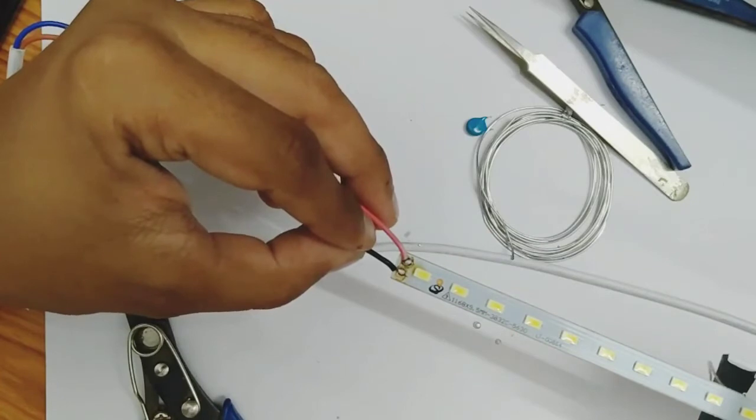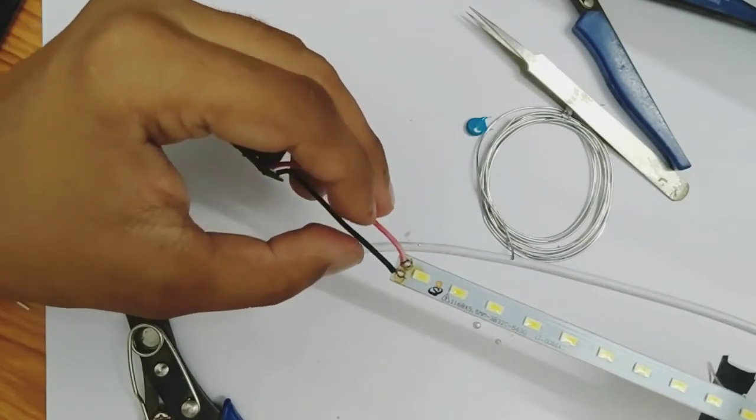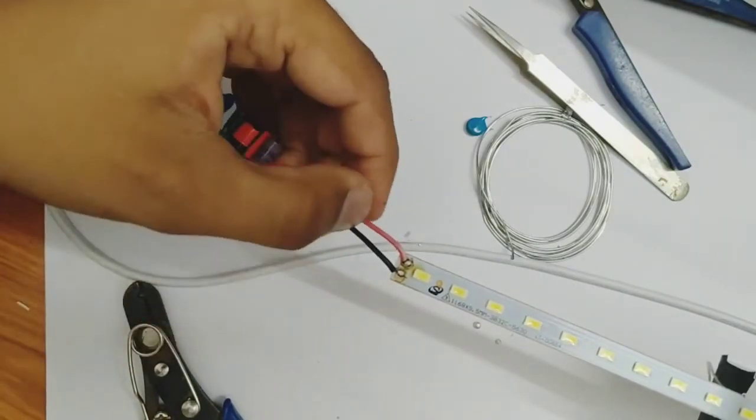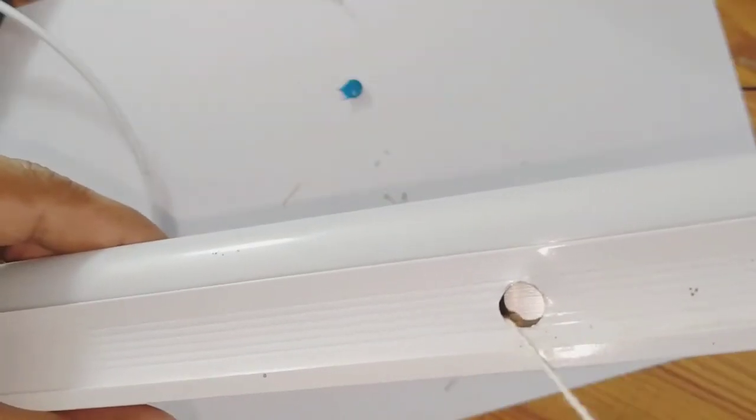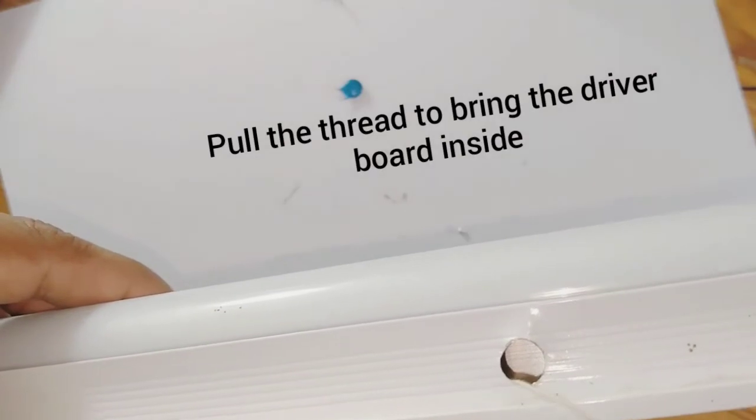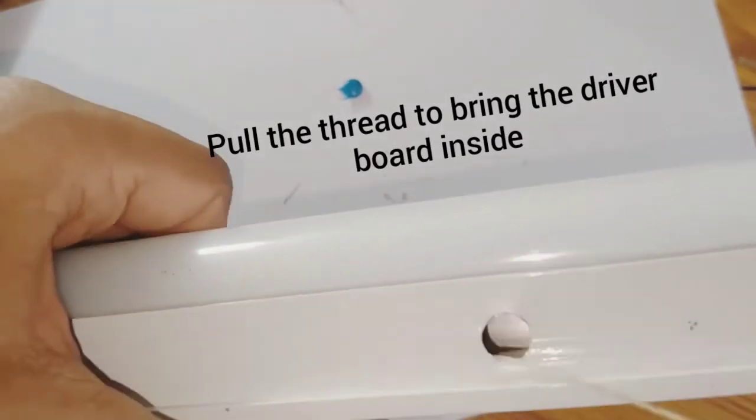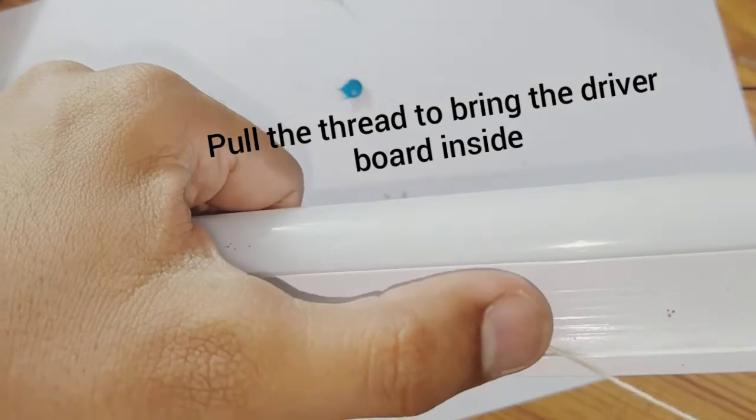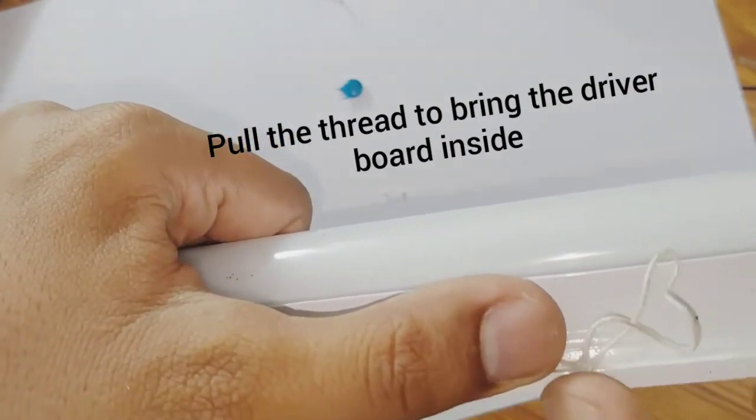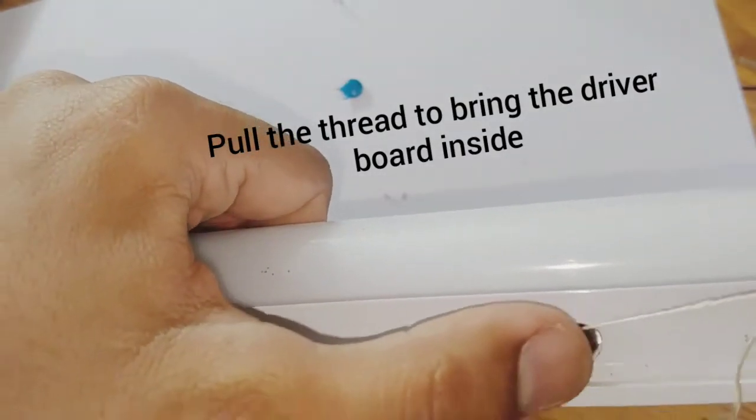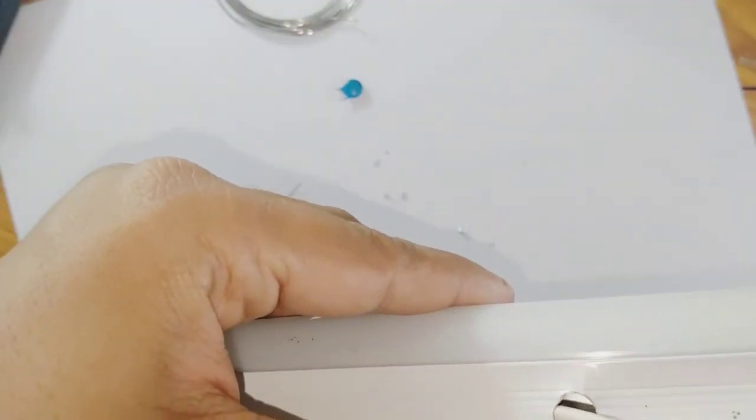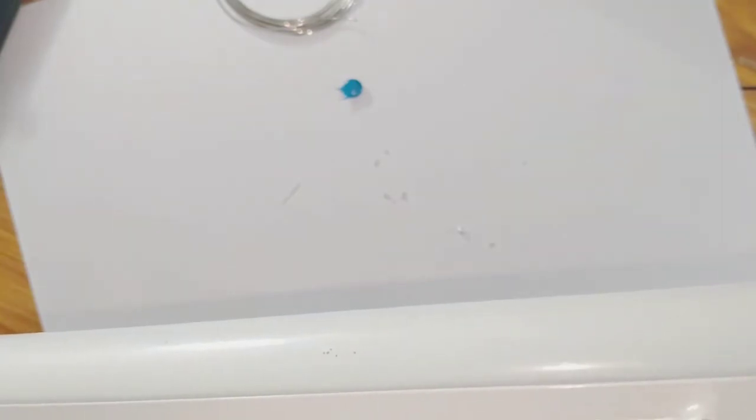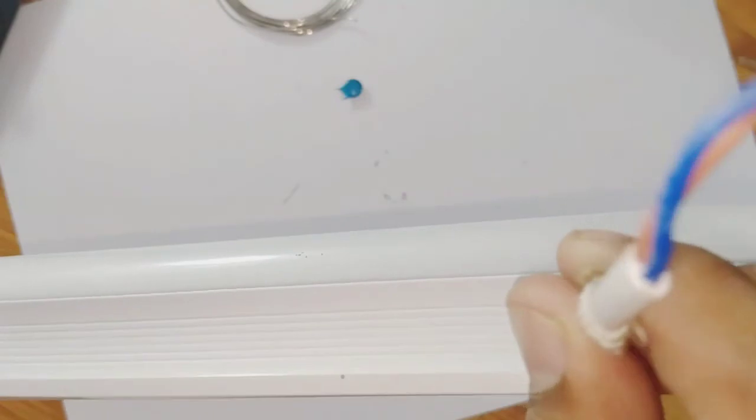Now it is almost ready. Now let me close this and check whether this LED tube light has got ready or not. Now I pull this thread to keep the repaired circuit inside the tube. Now you can see the cable, I just put it out such that the repaired circuit fits in.